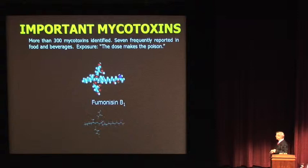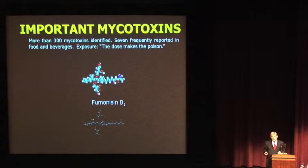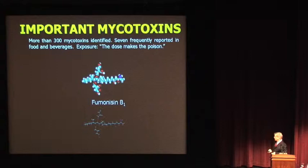The last one is the new kid on the block — fumonisin, a 20-carbon compound (eicosane backbone) with a tricarboxylic acid moiety. This has caused a lot of problems in horses — they even quit putting corn in Midwest horse feed after seeing what they call equine leukoencephalomalacia. The horse is very sensitive to this compound. It can kill horses and cause major central nervous system effects, causing holes in the brain. And it's found in corn — almost all corn has this.